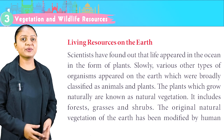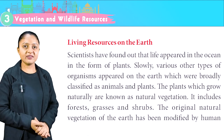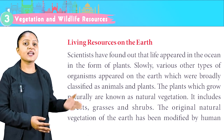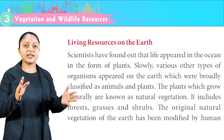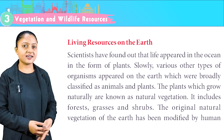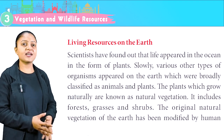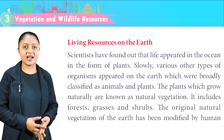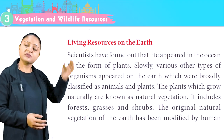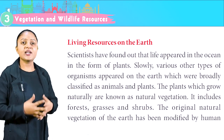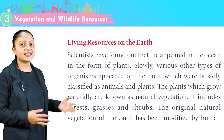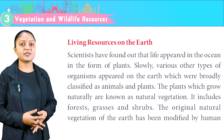Scientists have found out that life appeared in the ocean in the form of plants. Slowly, various other types of organisms appeared on the Earth, broadly classified as animals and plants. The plants which grow naturally are known as Natural Vegetation. It includes forests, grasses and shrubs.